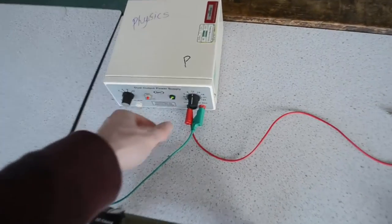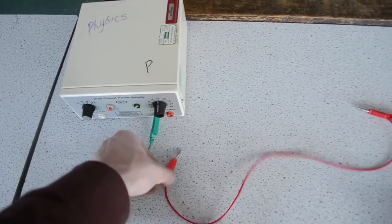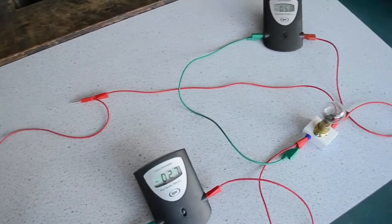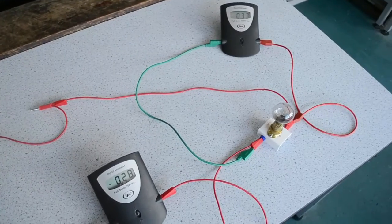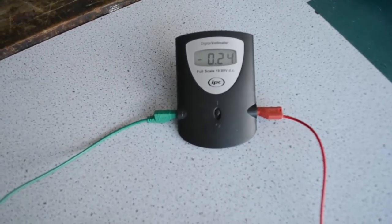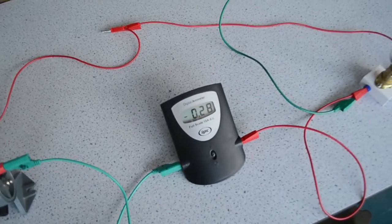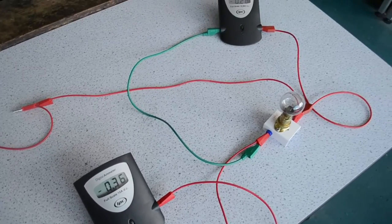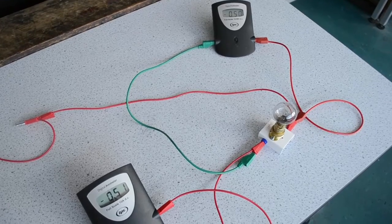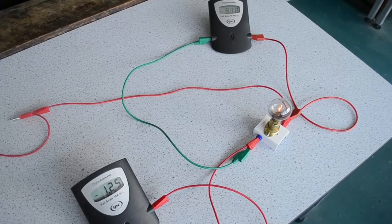We then switch the terminals around on the power supply in order to determine the reverse characteristic of the light bulb. Once again we slide the rheostat back and we start taking measurements. So here we have minus 0.25, 0.23 volts and minus 0.28 amps, and we keep adjusting the rheostat, the potentiometer, until we've taken another series of measurements.